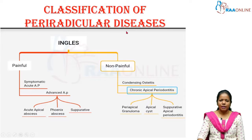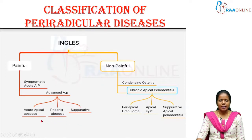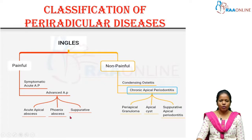According to Engel's classification, periradicular diseases are classified as painful and non-painful. Under painful, it can be symptomatic acute apical periodontitis or advanced apical periodontitis, which includes acute apical abscess, phoenix abscess (an acute exacerbation of chronic disease), and suppurative response.